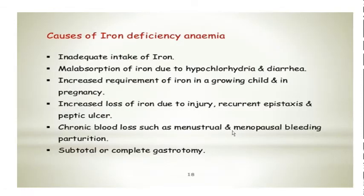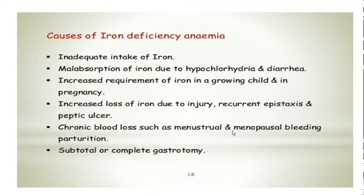The causes of iron deficiency anemia can be: inadequate intake of iron, which is very common in the Indian scenario; malabsorption of iron due to hypochlorhydria or any GIT problems, celiac disease, or chronic irritable bowel diseases; increased requirement of iron in a growing child especially during growth spurts and in pregnancy; increased loss of iron due to injury or peptic ulcer or cancer, which can be a cause for chronic blood loss apart from menstrual and postpartum blood loss; or it can be post-surgical, or subtotal or complete gastrectomy.